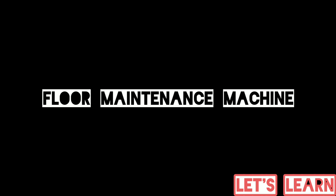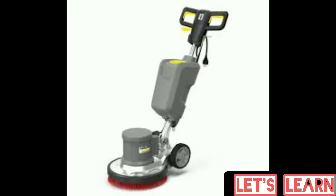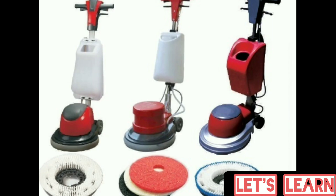The floor maintenance machine is a multifunctional machine that can scrub, polish, and buff floors. It has a driving disc available as a single disc or three small discs rotating in opposite directions, along with a water tank, solution tank, and sprayer. For scrubbing, a scrubbing brush or scrubbing pad is attached to the disc. For polishing, red-colored pads are applied. For buffing, white pads are used to create a high-gloss finish.